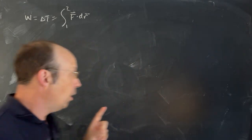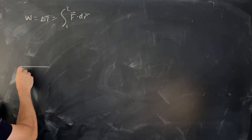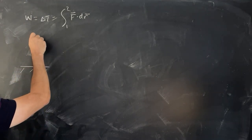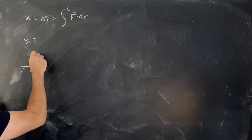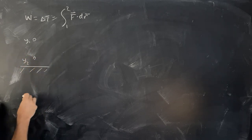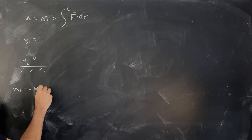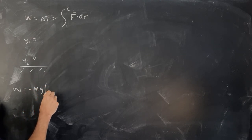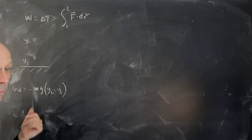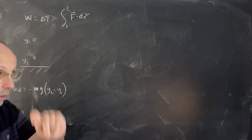So just a quick review: we did this problem going from Y1 to Y2 and we found that the work done was negative mg times (Y2 minus Y1). That was the work done by the gravitational force. We already did that, if you need to look at that again.